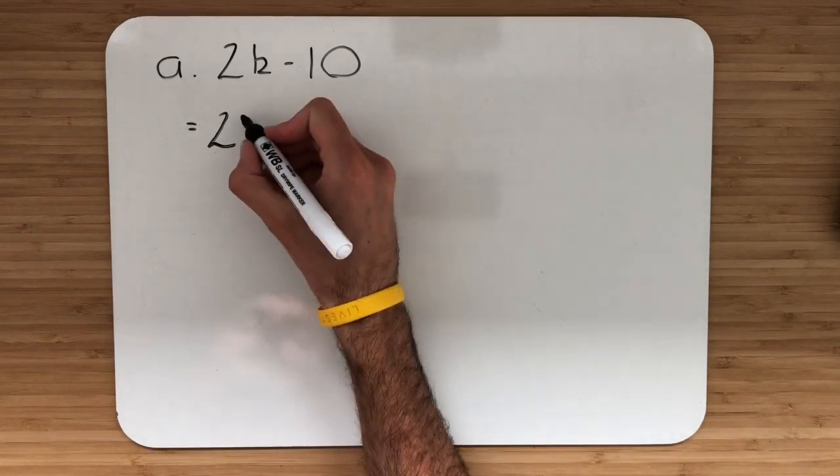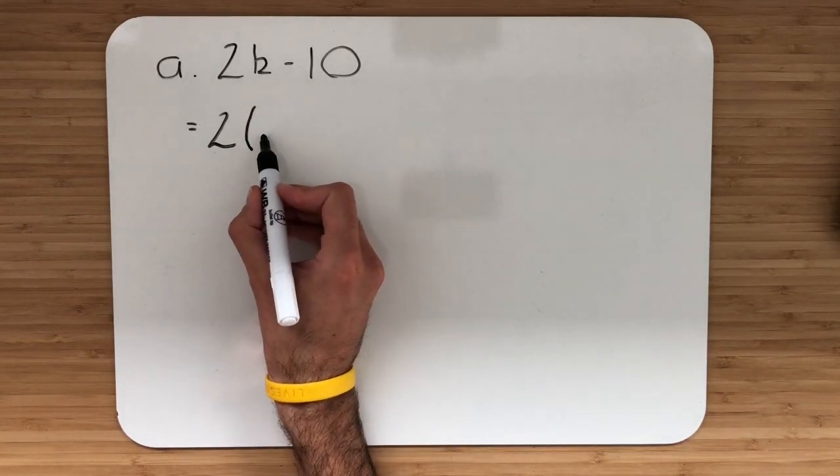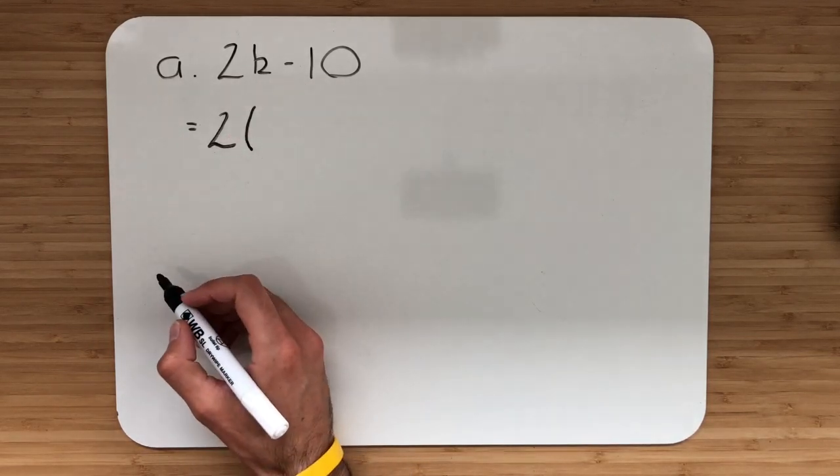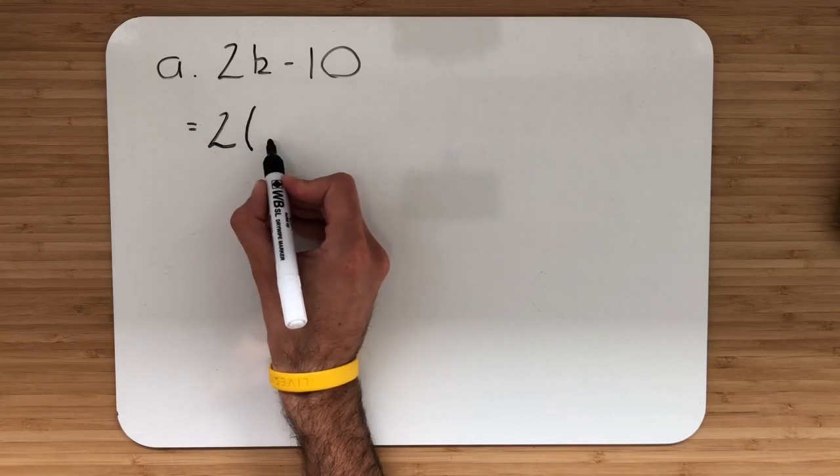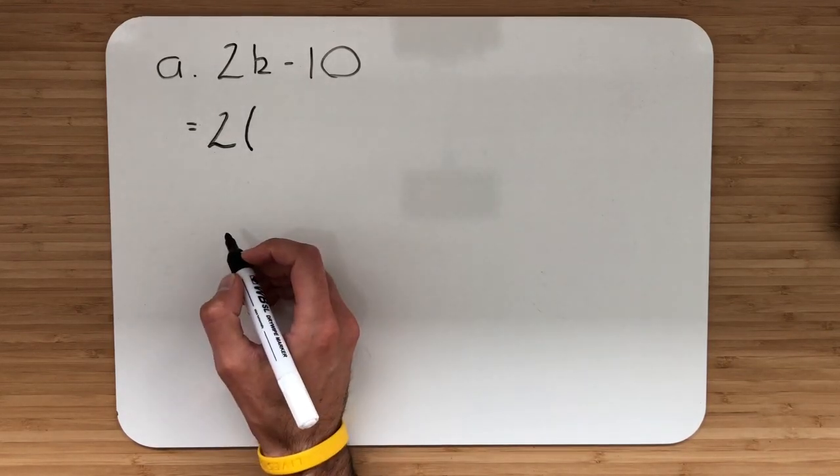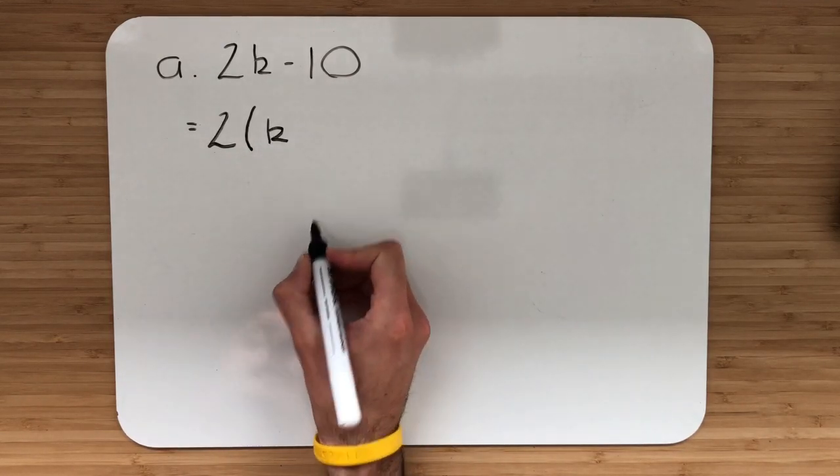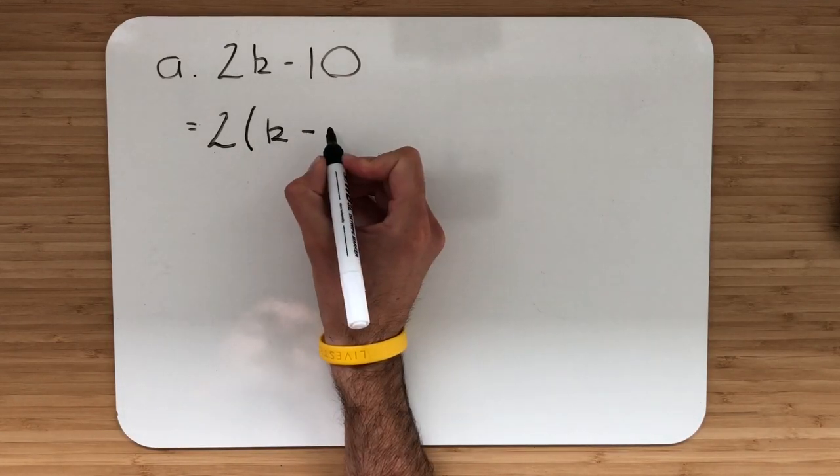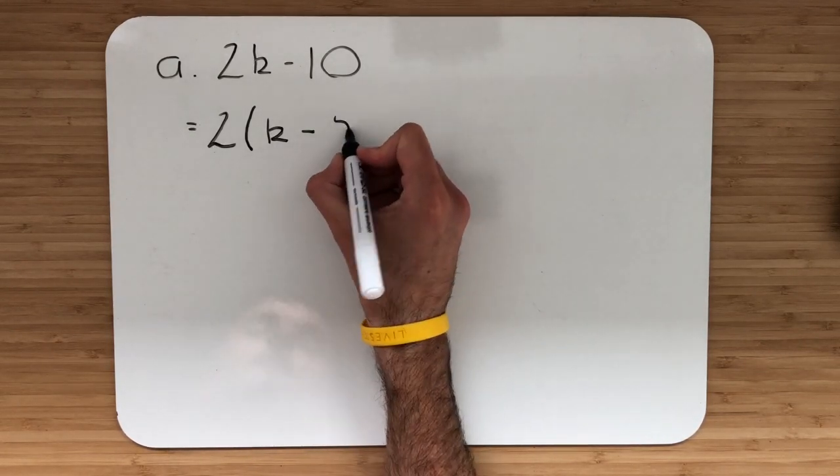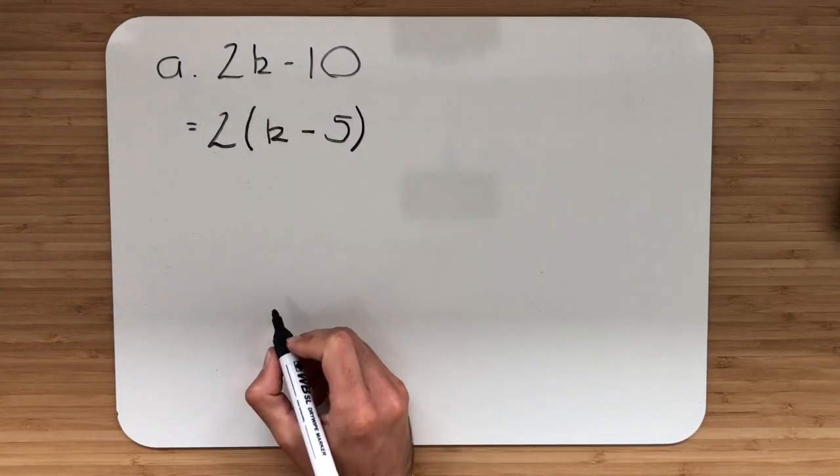So we take that and place it outside of our bracket. What I need to do is work out what has to go inside my bracket that will give me my initial starting expression. So 2 multiplied by what gives me 2k? That's k. I then put my subtract. 2 multiplied by what gives me 10? That is 5, and I close my bracket.